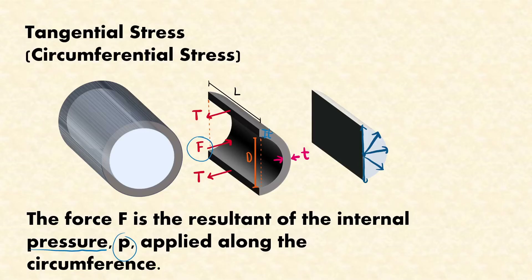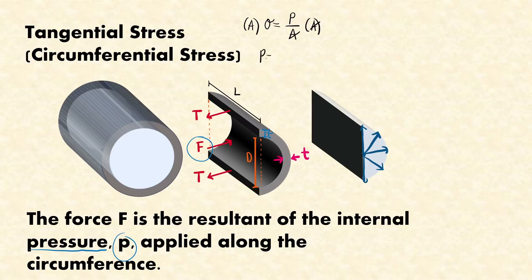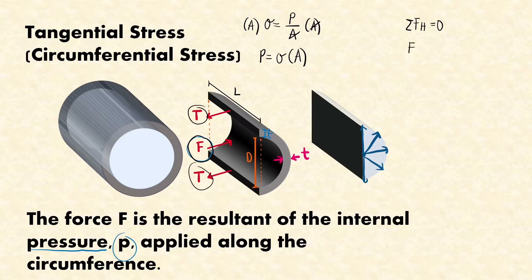Recall that stress is equal to force over area. So if I want to express force in terms of stress, I can multiply both sides by the area, giving: force = stress × area. Going back to our FBD, if we equate our horizontal forces, we have F = T + T, or simply F = 2T.